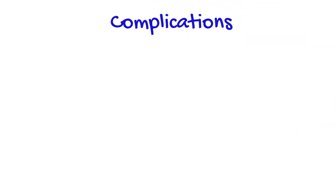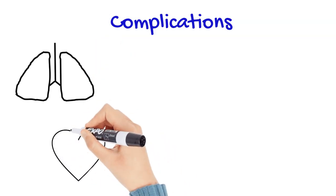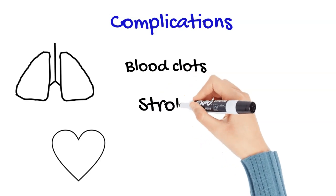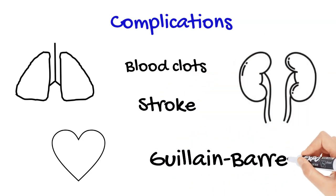Organ damage can lead to complications such as long-term breathing problems, heart complications, blood clots, stroke, chronic kidney impairment, and Guillain-Barré syndrome, a condition that results in temporary paralysis.